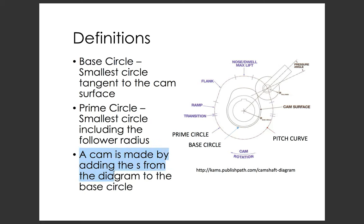To get the cam profile for a roller follower, we take our s-curve and add on our prime circle radius to it. From 0 to 360 degrees you take your s-value and add your prime circle and wrap that around in a circle. You can easily do that in Excel with a radar plot — you just plot s from 0 to 360 degrees, insert a radar plot of that column, and it gives you a nice cam profile.